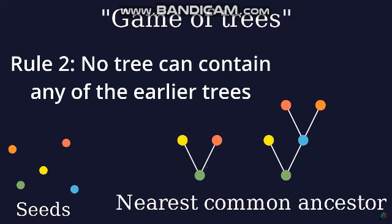In this tree, the nearest common ancestor of the yellow and red seeds is the green seed. In the other tree, the nearest common ancestor of the yellow and red seeds is also the green seed. It means that the first tree is contained in the second tree, so the second tree cannot be built.